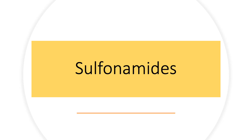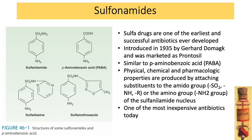For our first topic, we will discuss sulfonamides, one of the oldest antibiotics that we know and still use today. Sulfa drugs are one of the earliest successful antibiotics ever developed. They were introduced by Gerard Domagk in 1935 and were initially marketed as Prontosil. Sulfonamides are structurally similar to p-aminobenzoic acid, or PABA, which is very important for the formation of folic acid and eventually DNA. One of the most inexpensive antibiotics today is your sulfonamides.